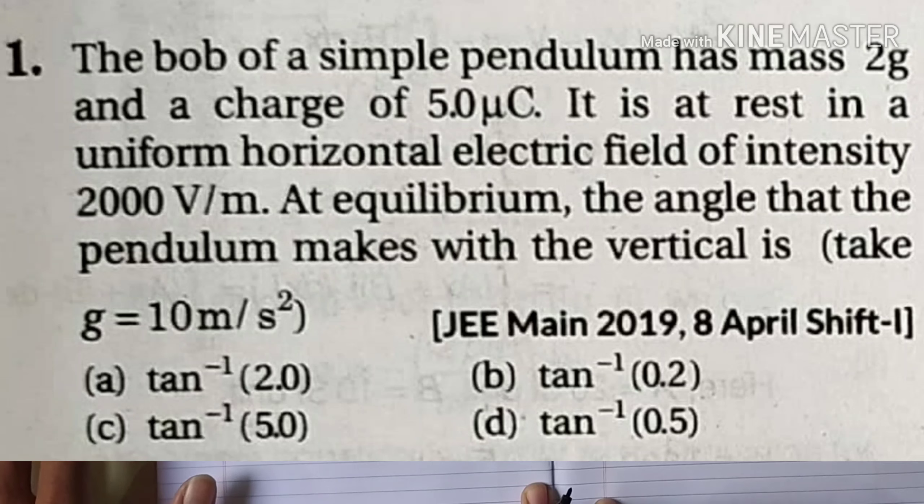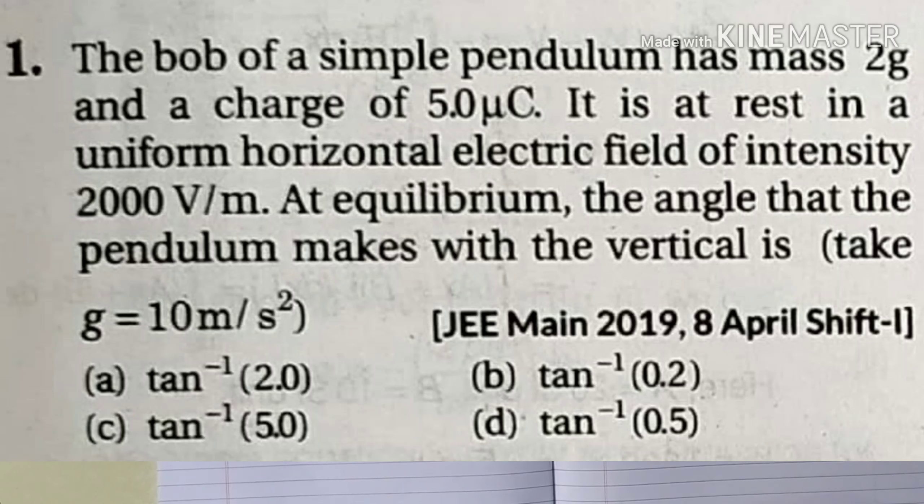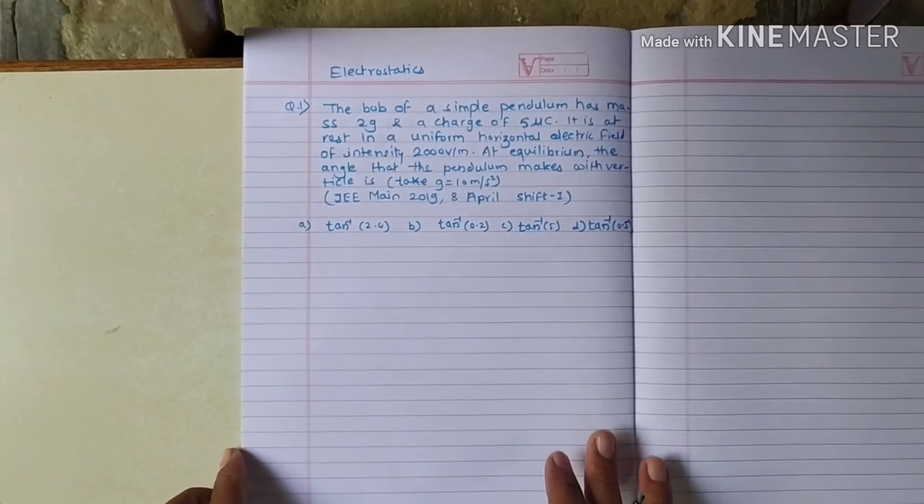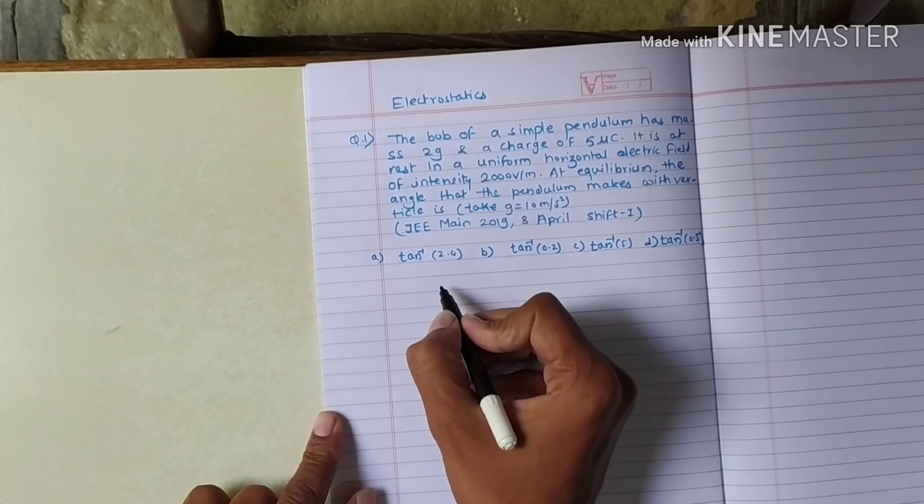The bob of a simple pendulum has a mass of 2 grams and a charge of 5 microcoulombs. It is at rest in a uniform horizontal electric field of intensity 2000 volts per meter. At equilibrium, the angle that the pendulum makes with the vertical is, if g is given as 10 meters per second squared. First of all, the question is that we have a pendulum bob.